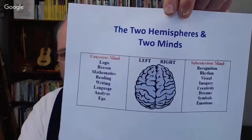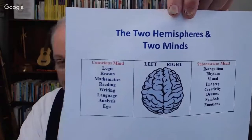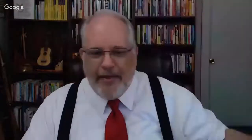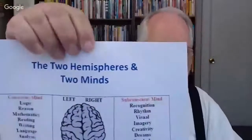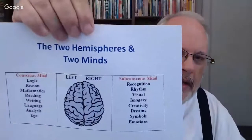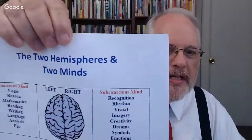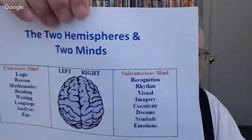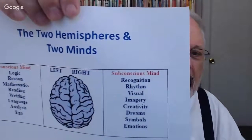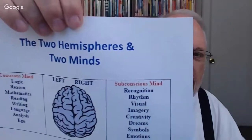The left brain is the analytical brain — we're going to talk more about analytical in a few moments. The right brain is the non-analytical brain, and I have a little chart here that I'm going to be using. For those of you who have seen my free hypnosis manual, this is one of the charts inside there. The conscious mind is based on logic, reason, mathematics, reading, writing, language, analysis, and ego. Basically, the conscious mind has the same traits as the left brain.